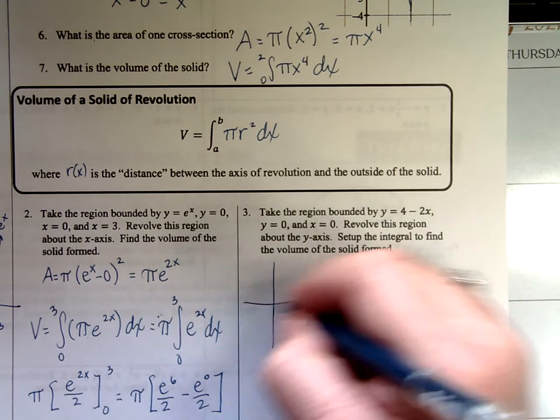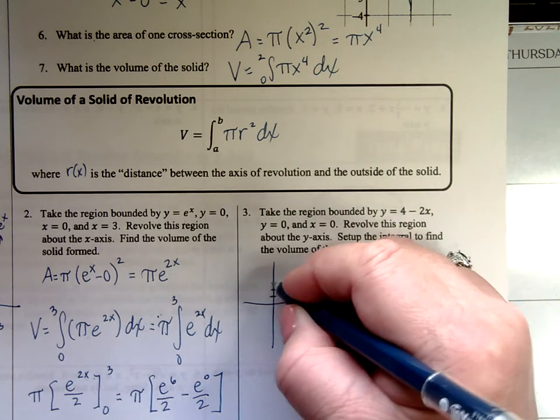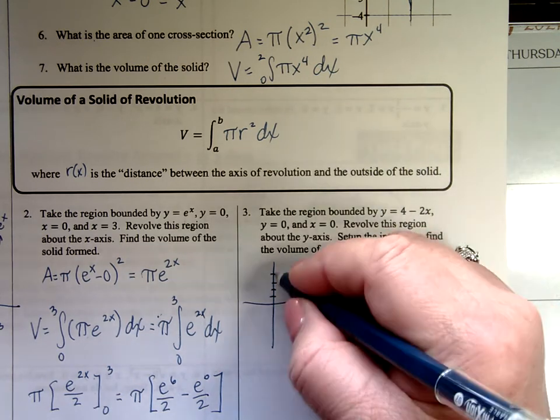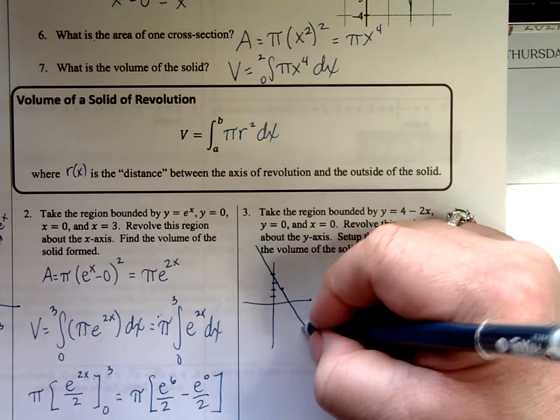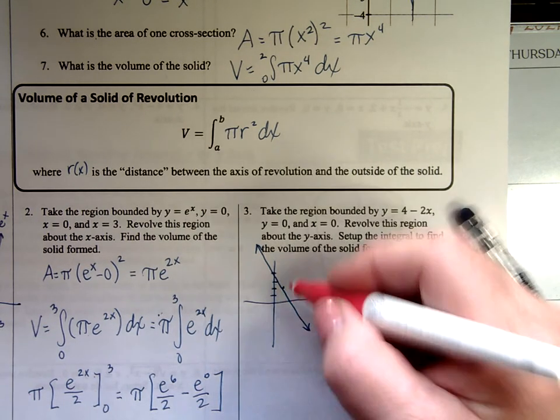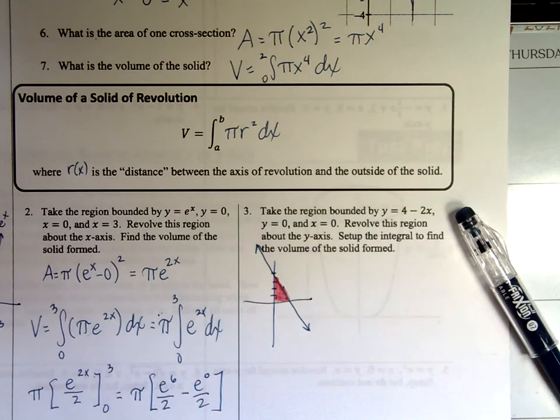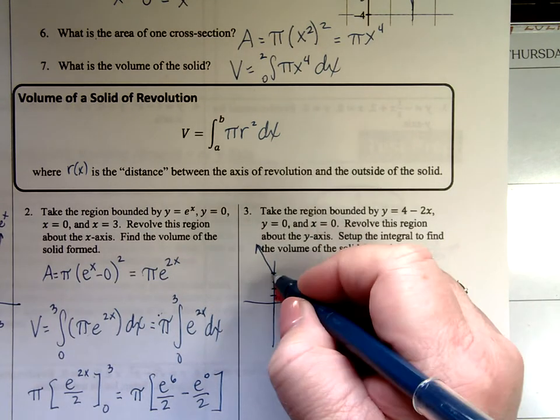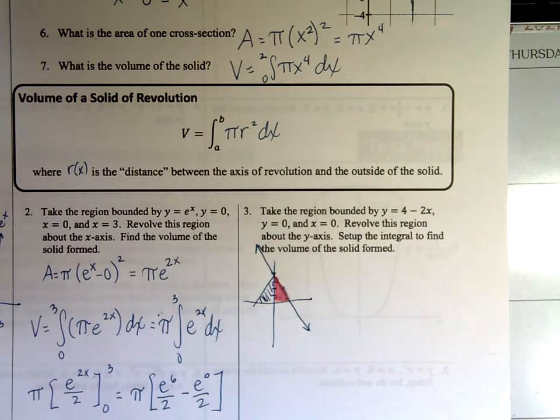This is 4 minus 2x. That's a straight line. The y-intercept is 4. The slope is negative 2. Down 2, right 1. It goes like this. It is bounded by the two axes, x equals 0, y equals 0. There it is. This time, I'm revolving it around the y-axis. That means it comes over this way, a mirror images.